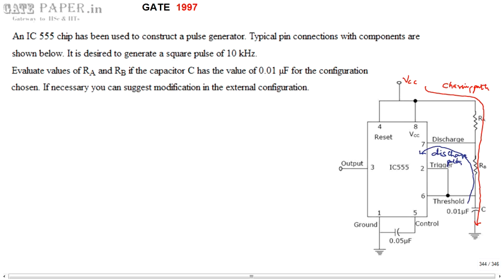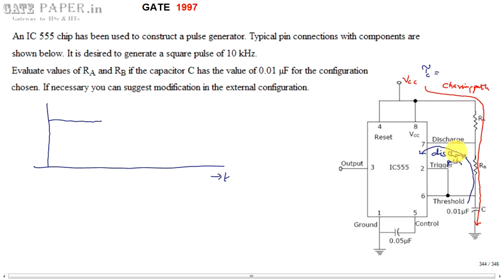Whenever the capacitor charges, the output will be at high level, and whenever the capacitor discharges, the output will go to low level. The charging time constant τ_C is found from the effective resistance and capacitance in the current path. Current coming from VCC passes through RA and RB — since they are in series, they are added up — giving τ_C = (RA + RB) × C. The discharge path goes through RB and C only, so τ_D = RB × C.